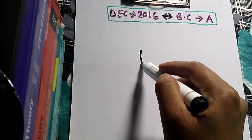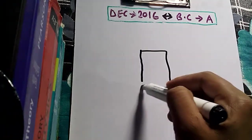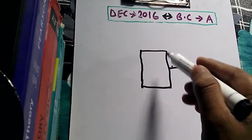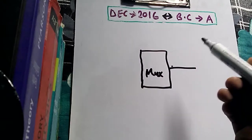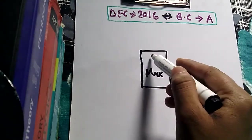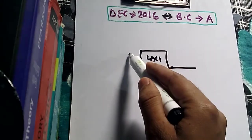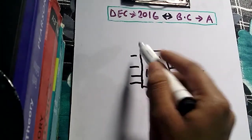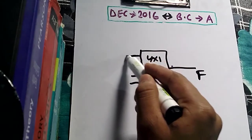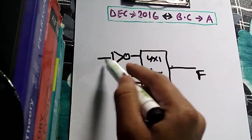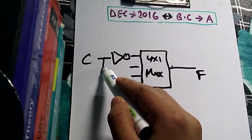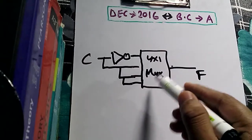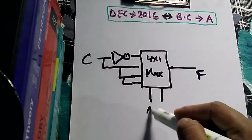Let's start with the first option and draw it. This box functions as a multiplexer — it is a four-by-one multiplexer, meaning it has four inputs and one output. The output is F. The first input has a NOT gate attached to it; this NOT gate gets input from variable C, and C also goes to the other input terminals.